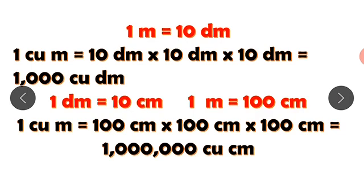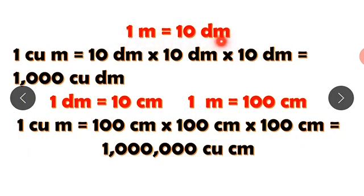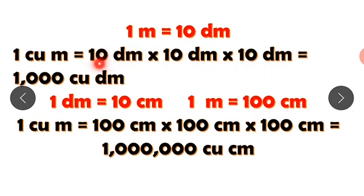One meter is equivalent to 10 decimeters, and one decimeter is equal to 10 centimeters. Let's convert one cubic meter into cubic decimeters. One cubic meter means one meter times one meter times one meter, which we convert directly to 10 decimeters times 10 decimeters times 10 decimeters. The answer is 1000 cubic decimeters.